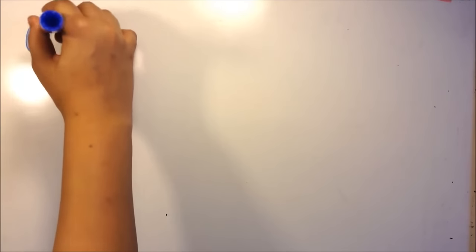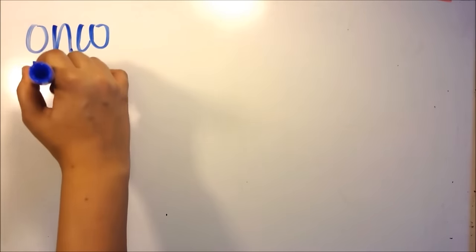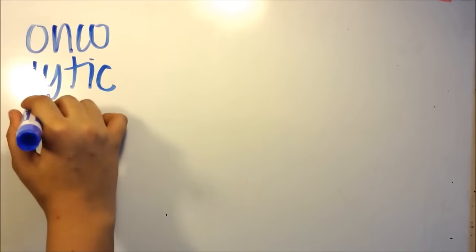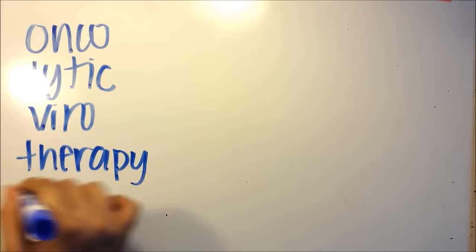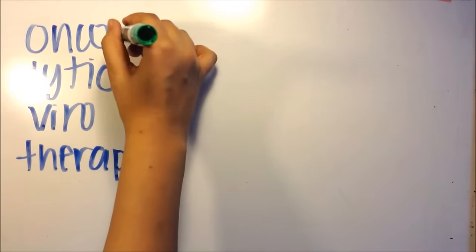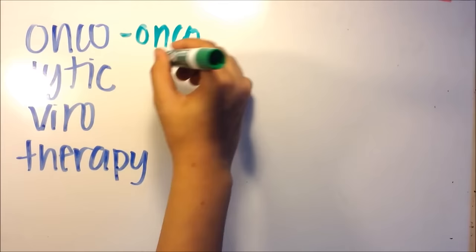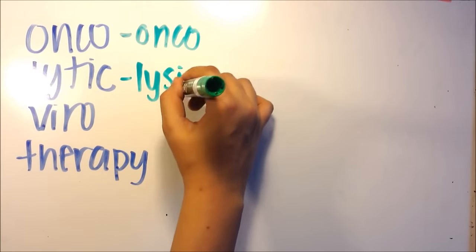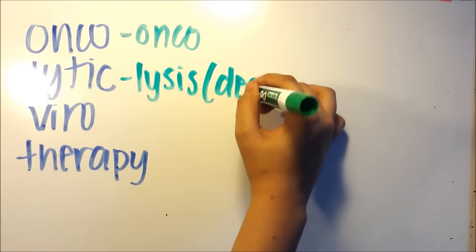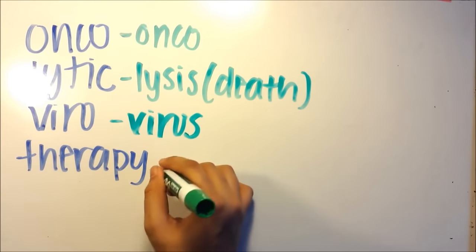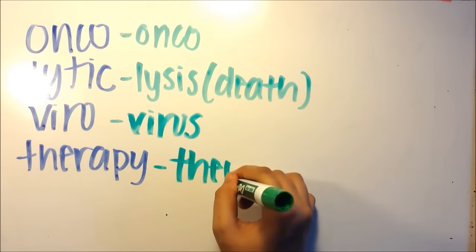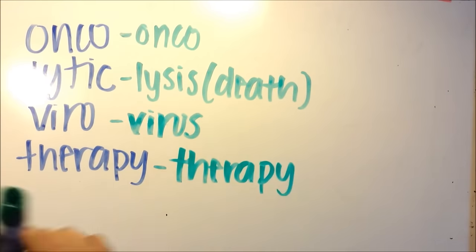First we have onco, we also have lytic, and then the second word we have viro and therapy. Now let's break those four roots up. Onco means cancer. Lytic relates to lysis, cell death or cell destruction. Viro relates to viruses and therapy relates to therapy. So that's a cell death due to virus therapy.